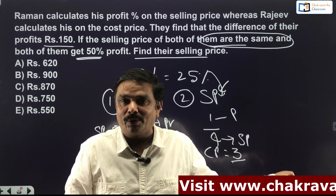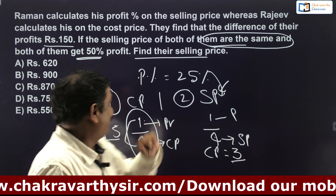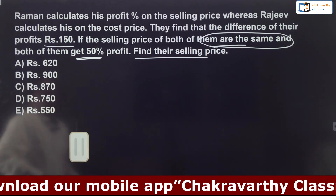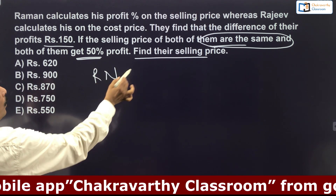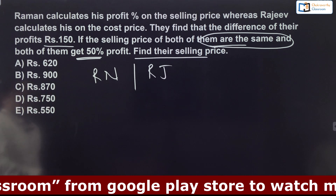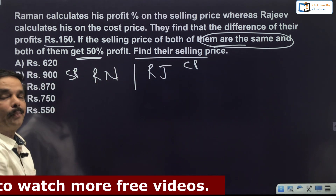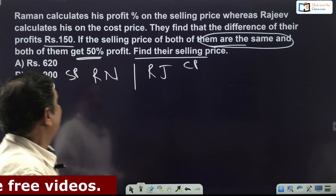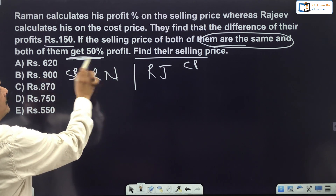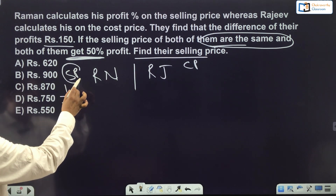In our regular course we go by fractions and the unitary method. Let's apply both here. Raman (RN) calculates profit on selling price; Rajiv (RJ) calculates profit on cost price. Both get 50% profit. 50% is 1/2. For Raman — profit on selling price — the ratio CP:SP is 1:2, meaning SP = 2, profit = 1, CP = 1.